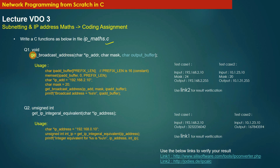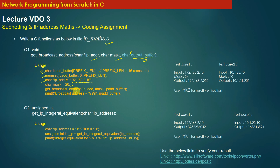In question one, you have to write a function get_broadcast_address. The input to the function is the IP address as a string and the mask value, and the output is a pointer to an output buffer in which you will get the result. You declare and initialize the output array, pass the IP address string (e.g., 192.168.2.10), the mask value (e.g., 20), and a pointer to the empty buffer as the three arguments.